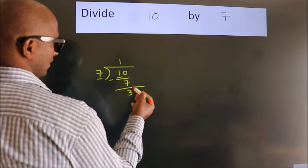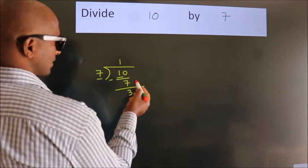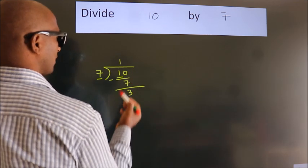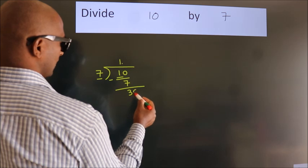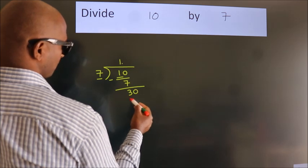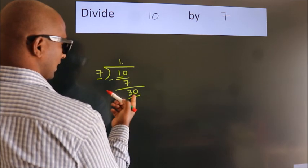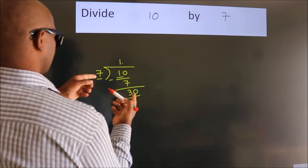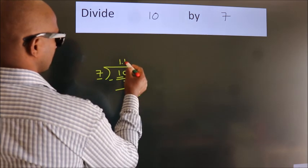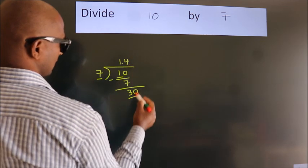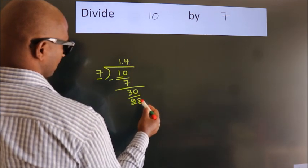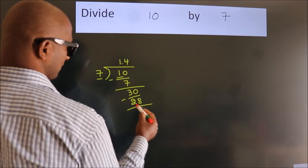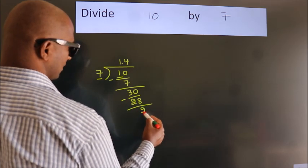After this, there are no more numbers to bring down. So what we do is, we put a dot and take 0. So we have 30. A number close to 30 in the 7 table is 7 fours, which is 28. Now we subtract. We get 2.